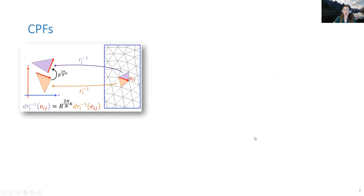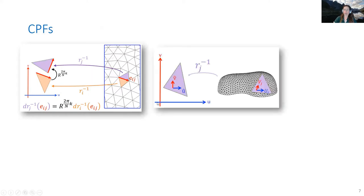The condition on the CPF is quite simple. These piecewise constant vector fields define a parametrization per face, and our constraint is that two neighboring triangles have a parametrization which agrees on the common edge.